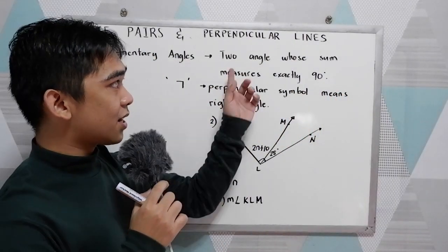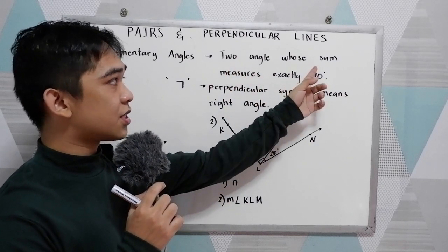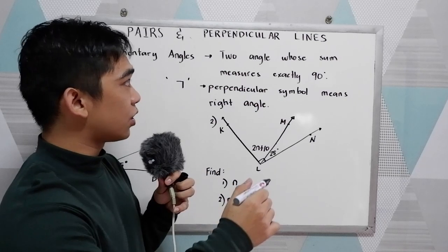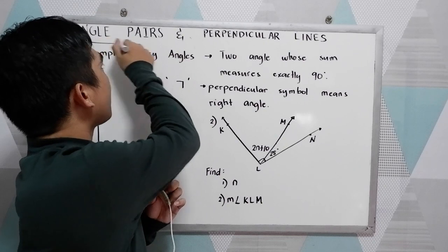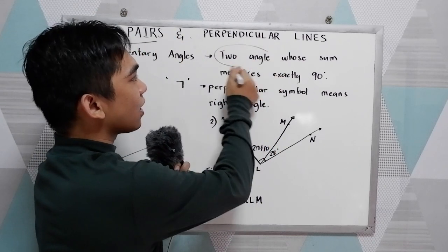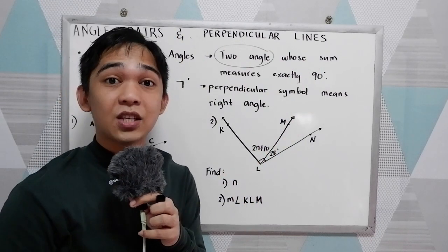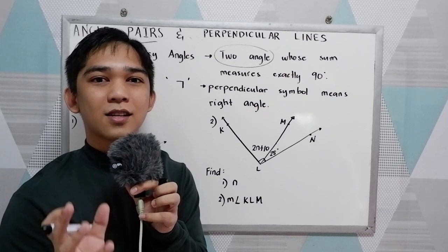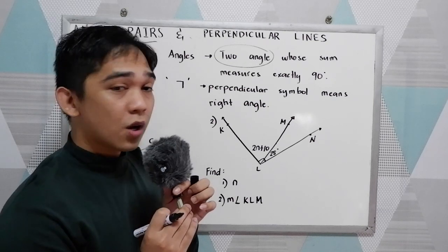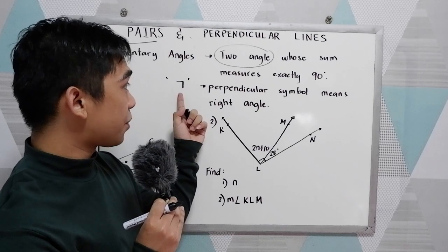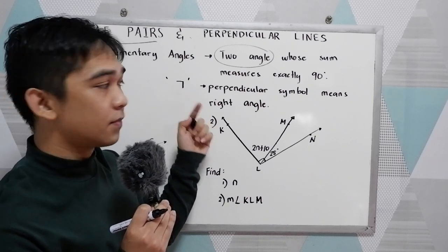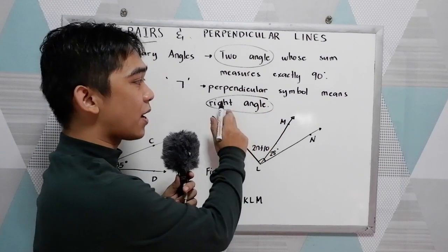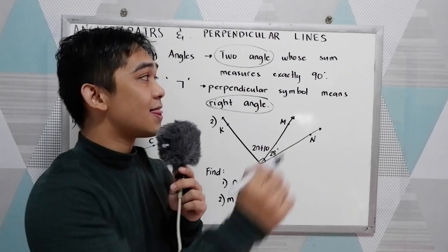Complementary angles are two angles whose sum measures exactly 90 degrees. Notice in our definition we are dealing with a pair of angles — two angles whose sum measures exactly 90 degrees. You will also encounter the perpendicular line symbol, which means right angle. We know that a right angle measures exactly 90 degrees.